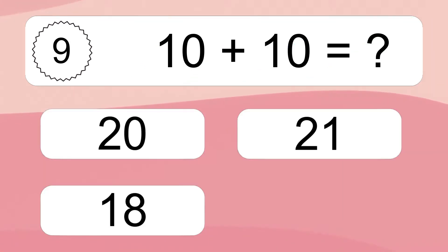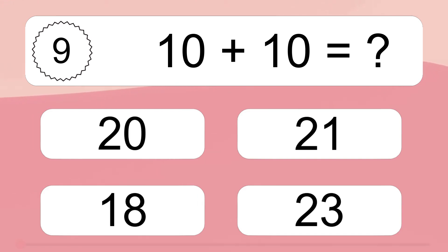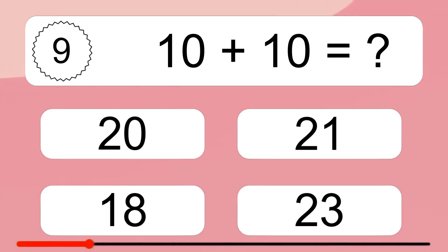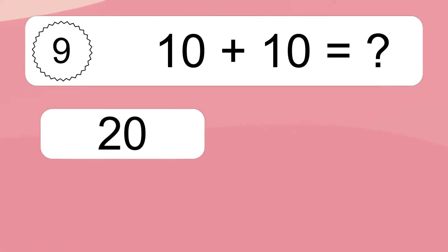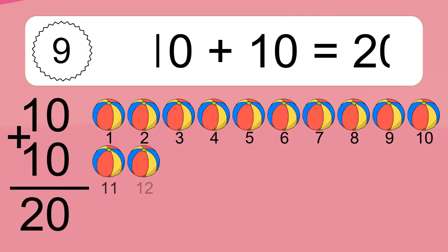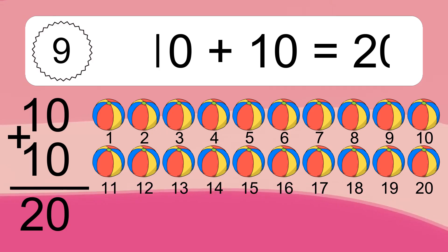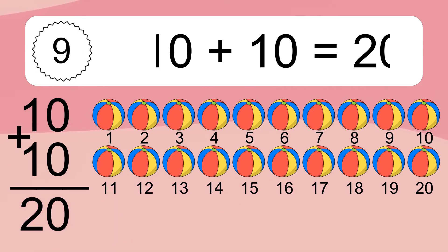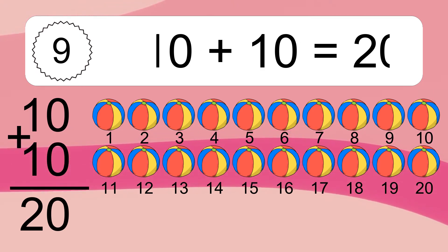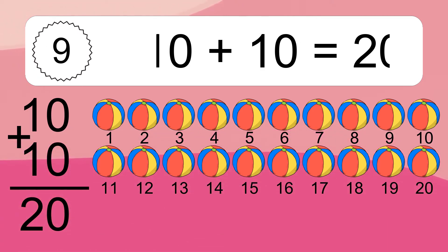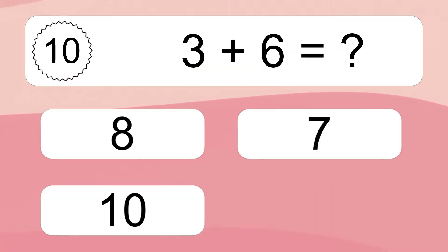10 plus 10 equals what? 10 plus 10 equals 20. Let's count it. 1, 2, 3, 4, 5, 6, 7, 8, 9, 10, 11, 12, 13, 14, 15, 16, 17, 18, 19, 20.